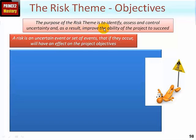Identifying, assessing, and controlling risks improves the ability of the project to be successful. A risk is an uncertain event or set of events that, if they occur, will have an effect on the project's objectives. It's important to consider the difference between an issue and a risk — a risk hasn't happened yet, and if it does occur it will have a negative impact if it's a threat, or a positive impact if it's an opportunity.